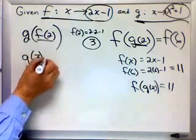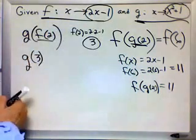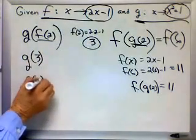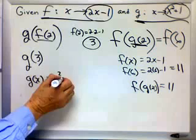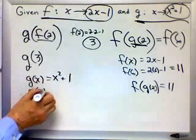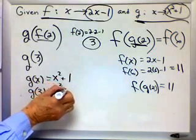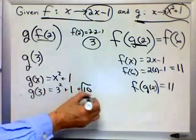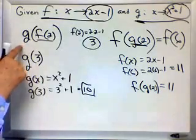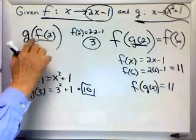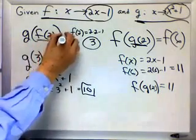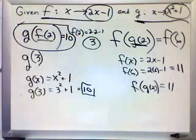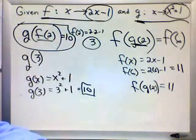So now I have g of 3. Which equation do I go to? The g of x is x squared plus 1. So g of 3 is going to be 3 squared plus 1. 3 squared is 9. Plus 1 is 10. So my final answer for g of f of 2 is equal to 10. There's the final answer on that one. You had two steps to do. You can do things like that. Good luck.